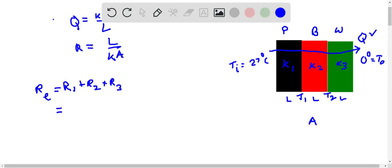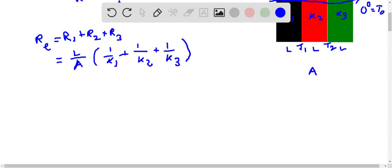We have the length and area constant, so let us take them as common: L/A times (1/k1 + 1/k2 + 1/k3). Now we plug in all the values of k.